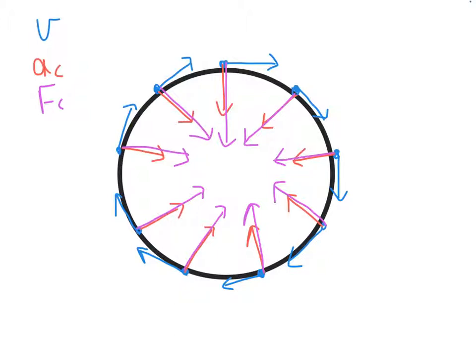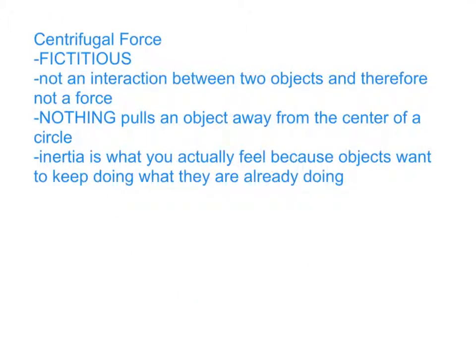I want to address one word commonly used with circles and explain why it's wrong: centrifugal force. This is fictitious — there is no such thing. A force requires an interaction between two objects; this is not one. There is nothing that actually pulls an object away from the center of a circle. The acceleration and centripetal force are both directed towards the center. What you actually feel is inertia — the tendency for objects to keep doing what they're already doing, which is moving in a straight line.